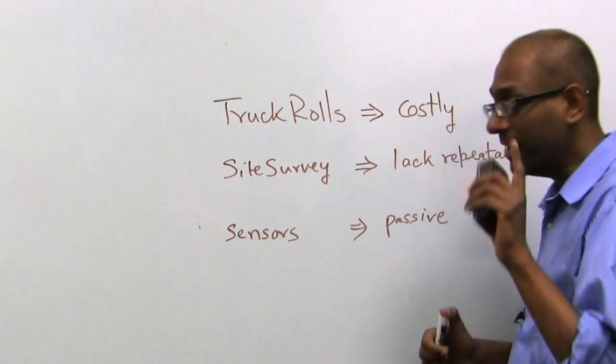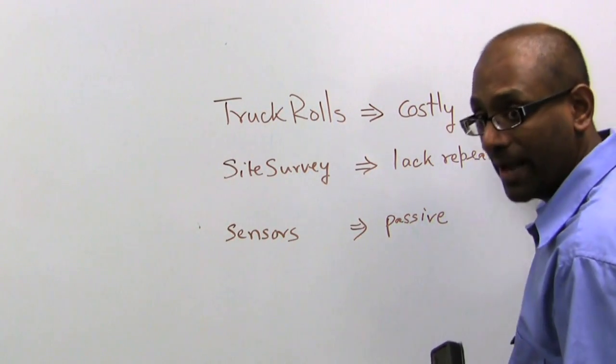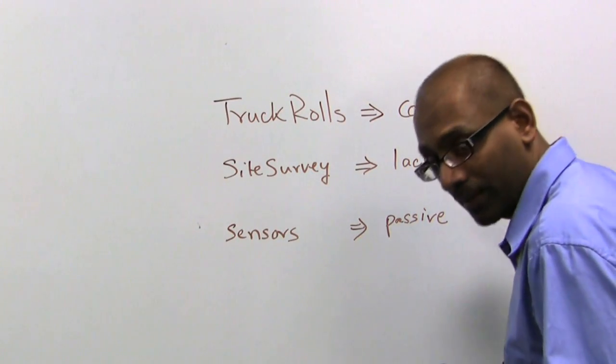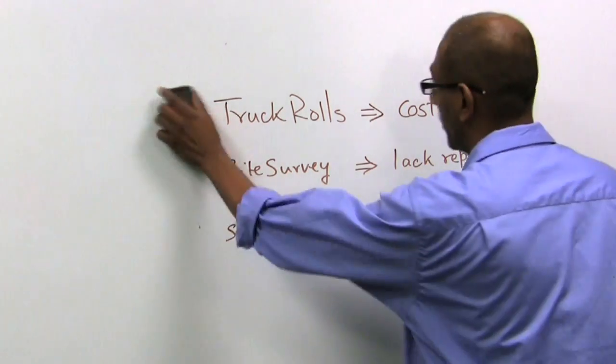So remember, bear in mind that these are the three key problems that we are trying to solve. One of reacting in an expensive manner, creating repeatability, and making sure that we transform from passive to active. So bear that in mind for the rest of the video, please.